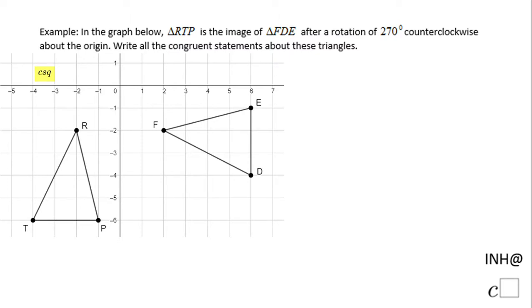Welcome or welcome back to C-Squared. In this example, we're going to look at writing some congruent statements about this rigid transformation. We have triangle RTP, which is the image of triangle FDE after a rotation of 270 degrees counterclockwise. So this guy was rotated and we get this guy.